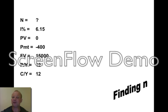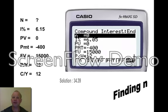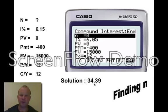You don't know N. 6.5% is the interest rate. PV is zero. Payment is $400 — remembering to put a minus there. $15,000 is the future value. Payments per year of 12. Compounding periods per year of 12. Enter into the calculator and you'll end up finding N, which is F1.